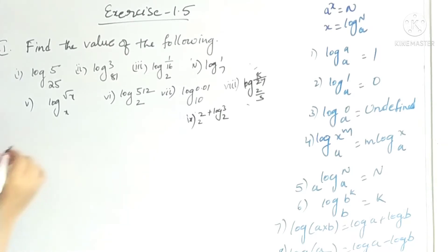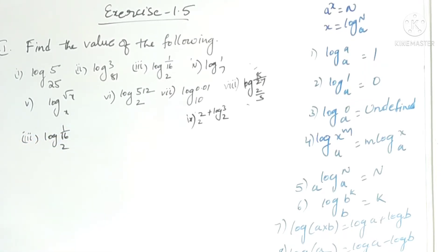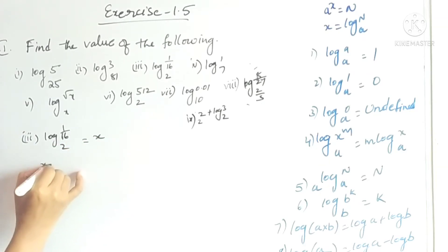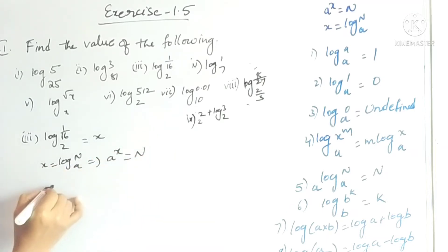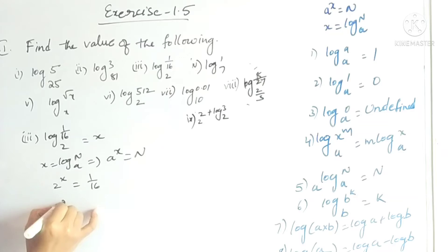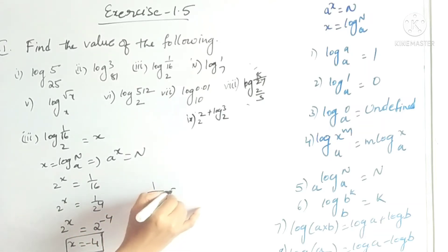The third problem is log(1/16) base 2. Let it be x. Exponential form: 2 to the power x equals 1/16. Now 16 in terms of 2: 2×2=4, 4×2=8, 8×2=16, so 16 is 2 to the power 4. Therefore 2^x equals 2^(−4), and x equals −4. Recall that 1/a^n equals a^(−n) from exponent rules.